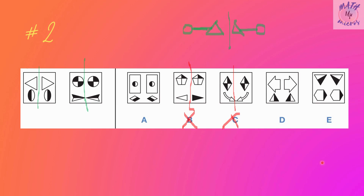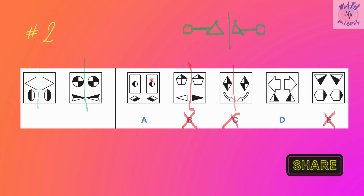Moving to option E: the right side should appear on the left side, but here the black on the right should be black on the left, and it is not the same. So option E is ruled out. Now for option A: on the right side I can see white color, and this should appear on the left side — so the left side should be white, but it is black. So option A is also ruled out.